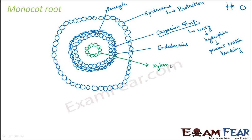Xylem is the conducting tissue that conducts water and minerals from roots to different parts of the plant. It is made up of tube-like structures — tracheids and vessels. Here we are looking at the cross-section, so we only see the top view of those tubes. The center portion — the core — is known as pith, so this central region is known as pith.